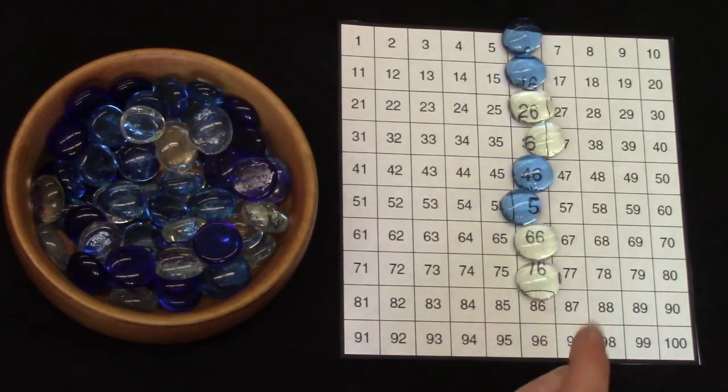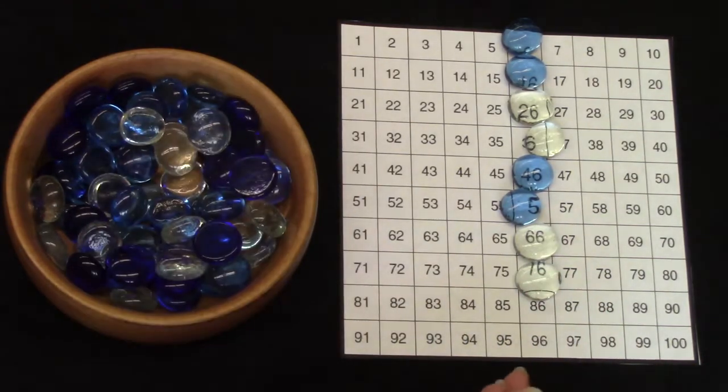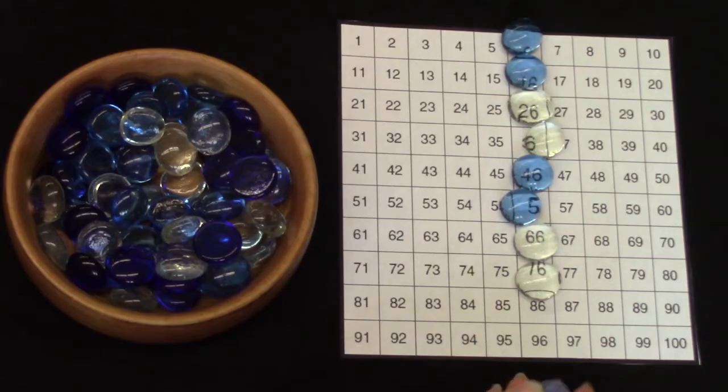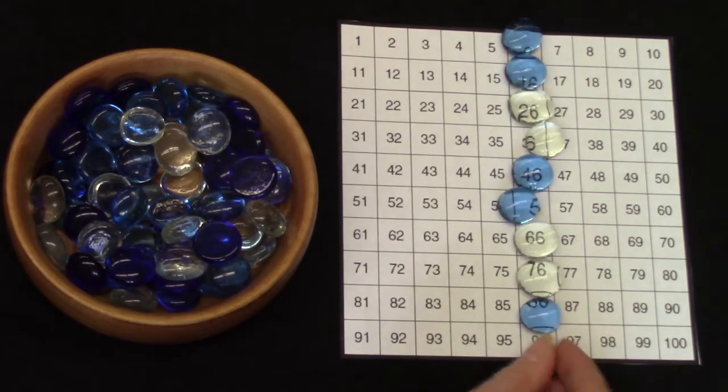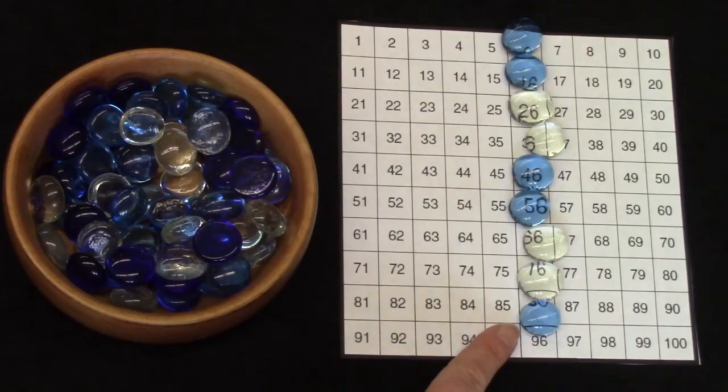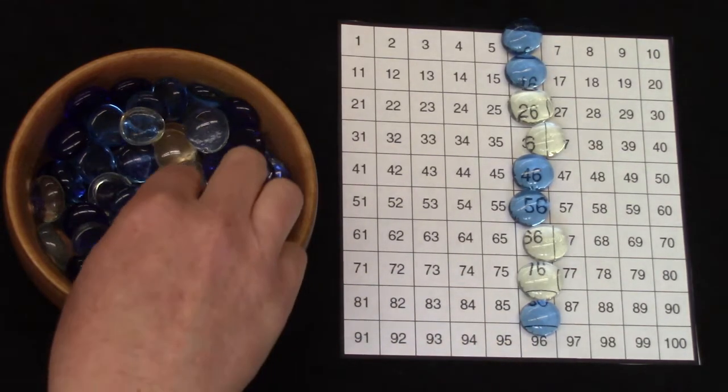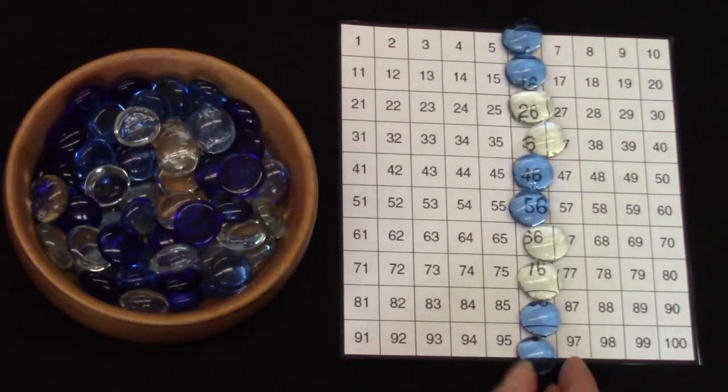Do you know what 76 plus 10 is going to be? You're right. It is 86. You're noticing the pattern. All of our gems are in a line.